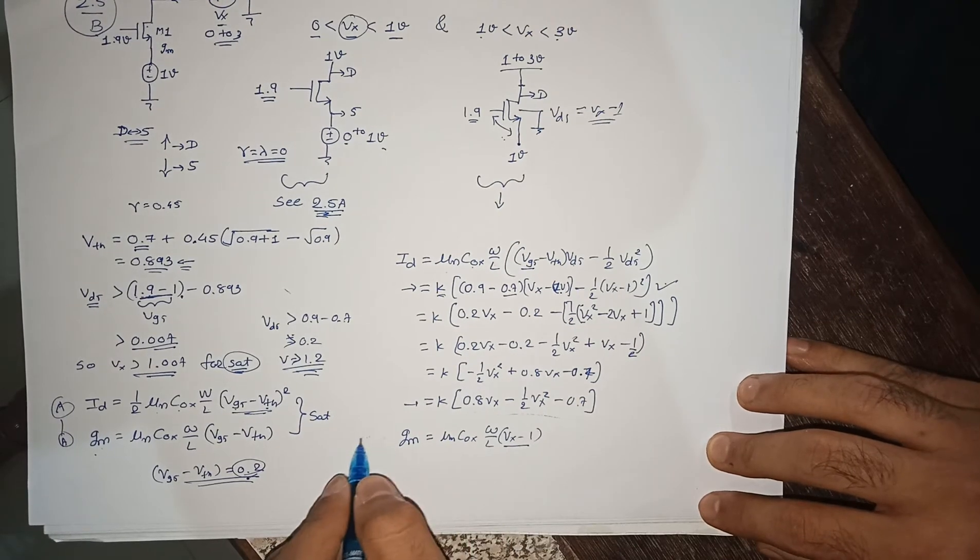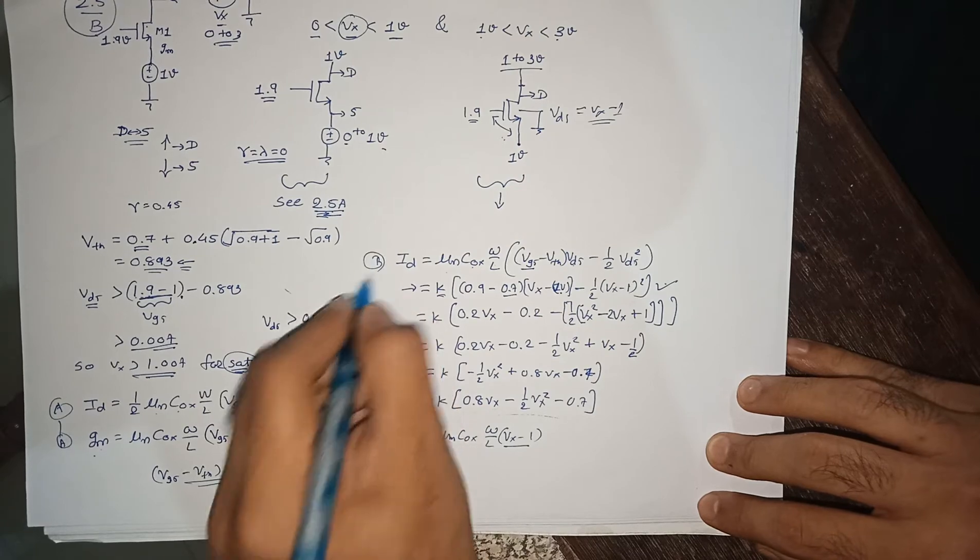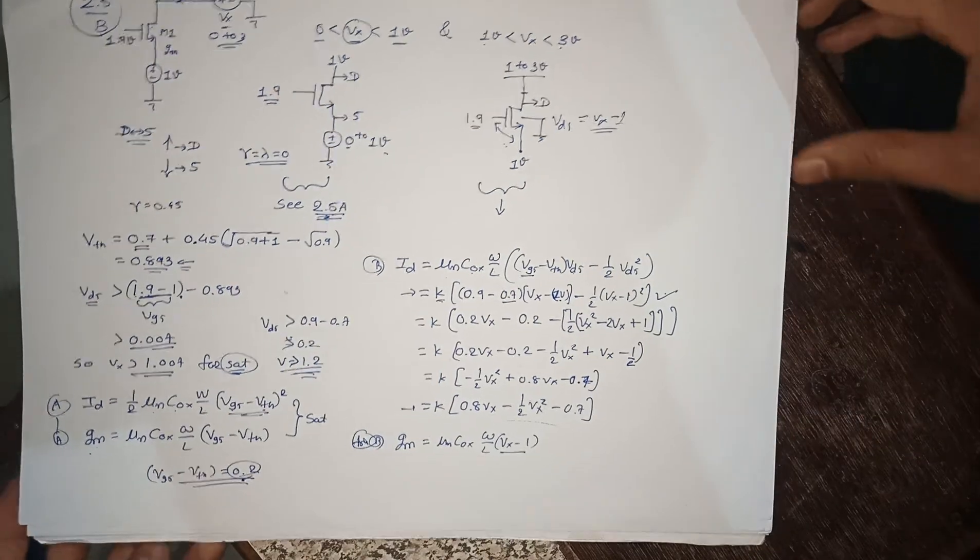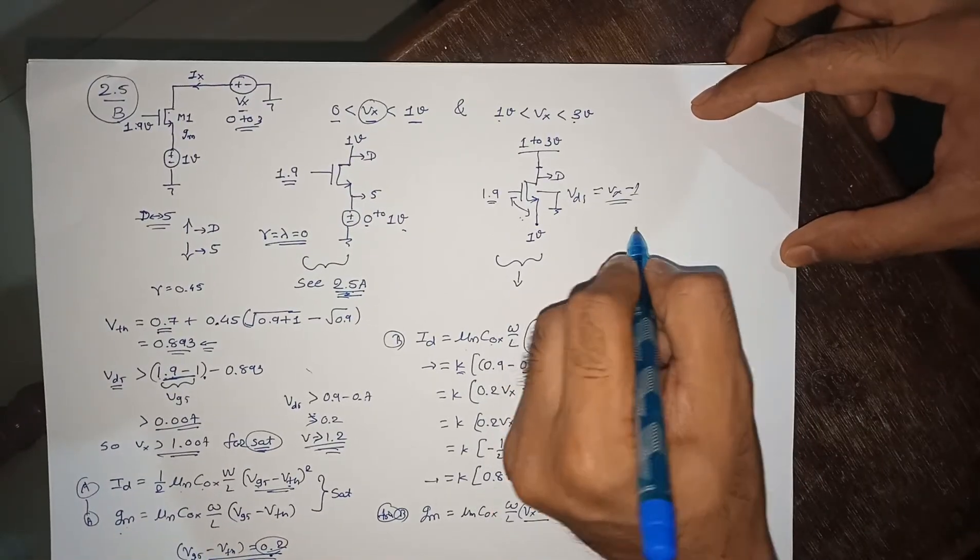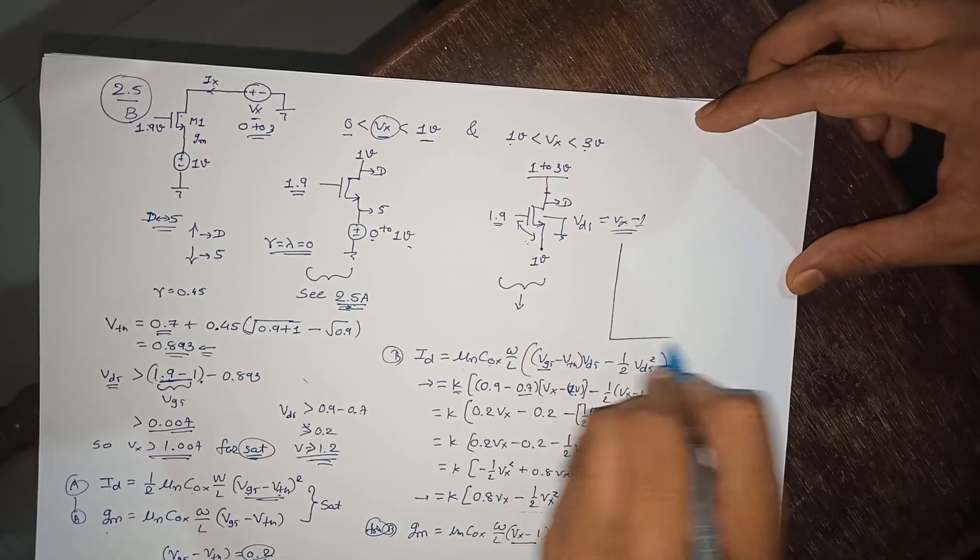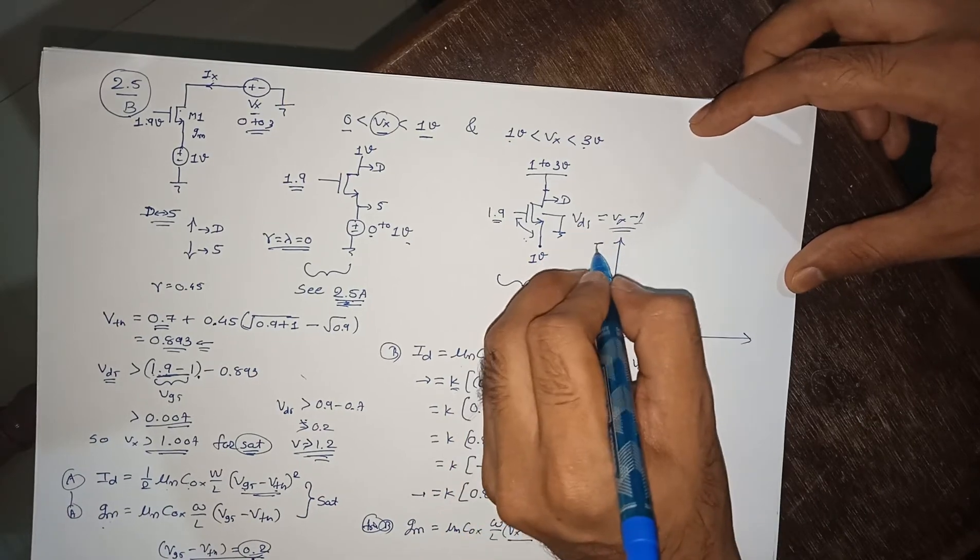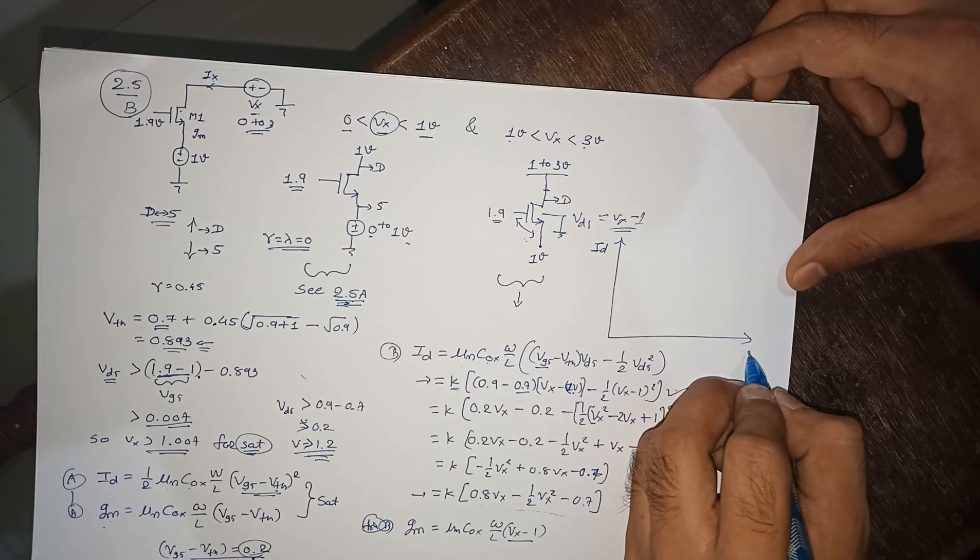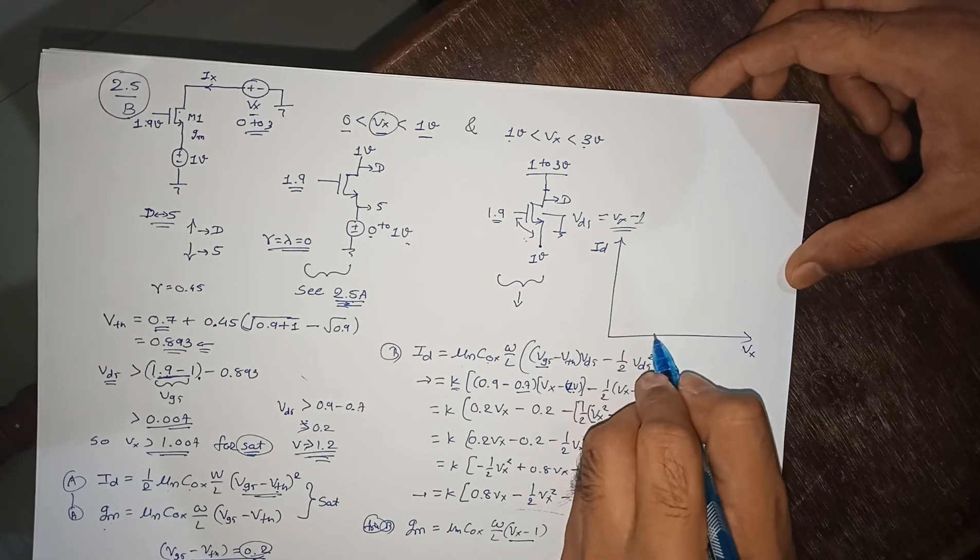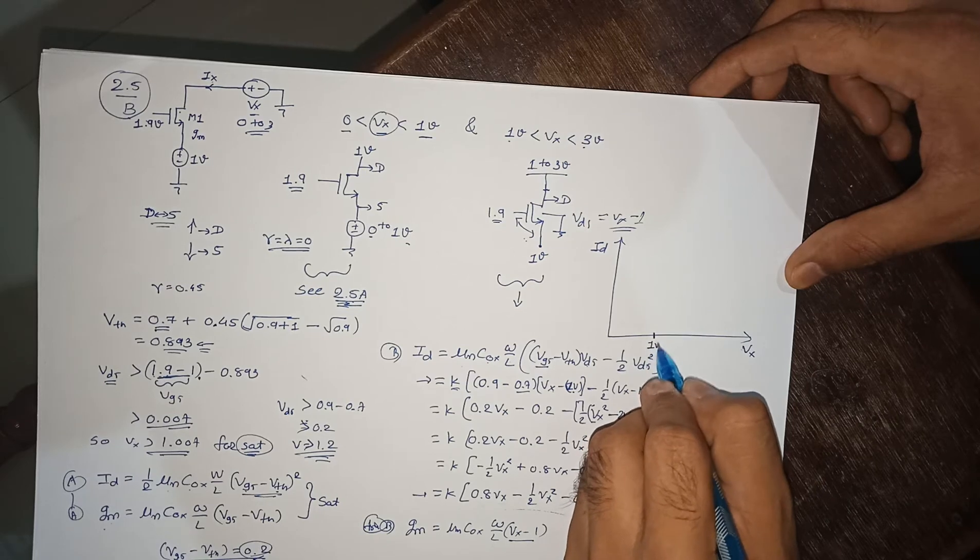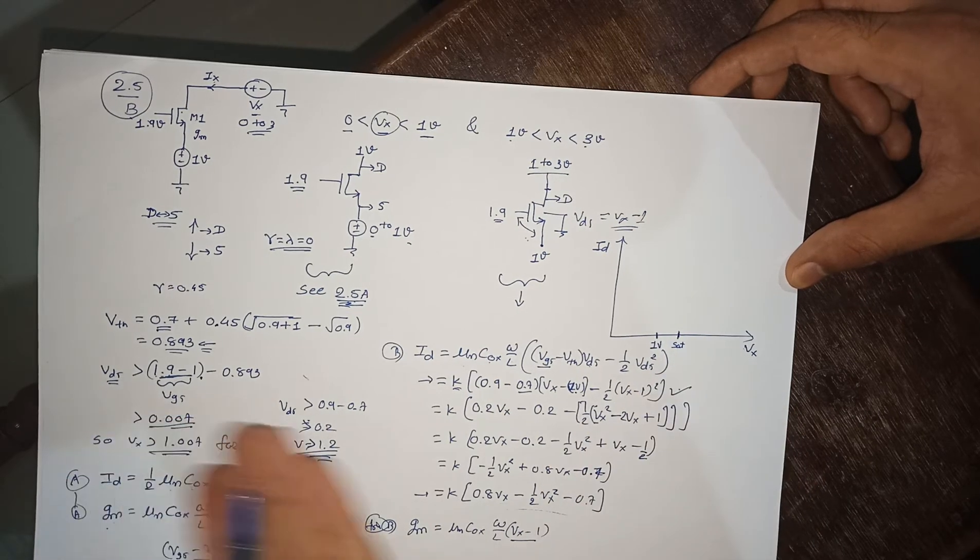Now how your graph will look like. Let's see. Here we'll draw ID versus VX. This is 1 volt. This is saturation point with respect to if you are considering or not considering. Let's say you're not considering, that is 1.2.